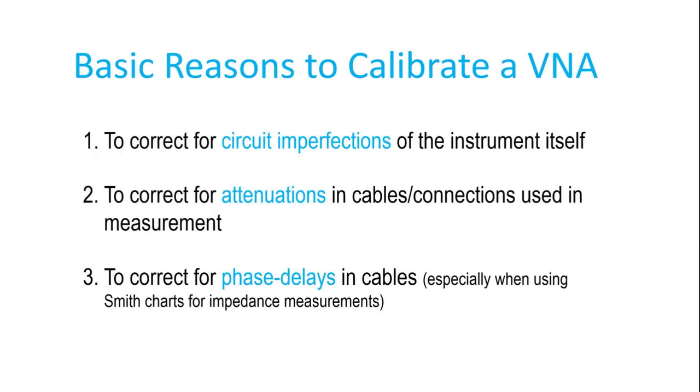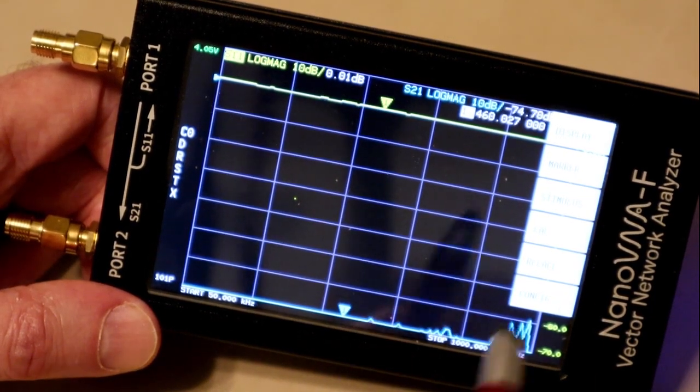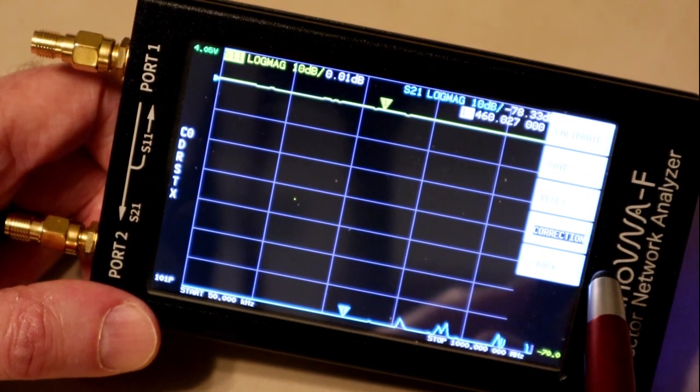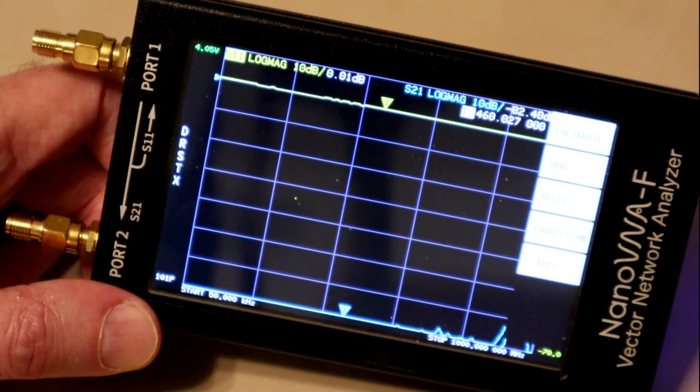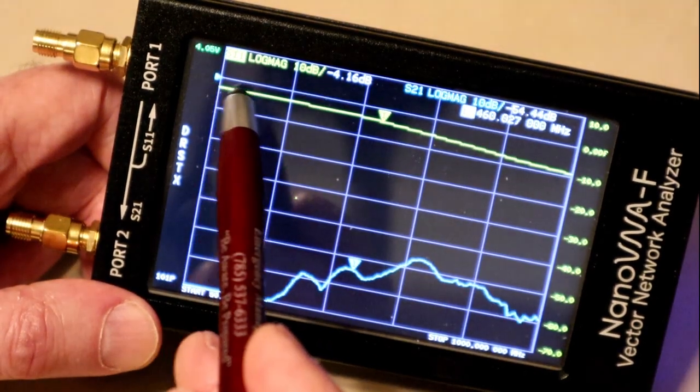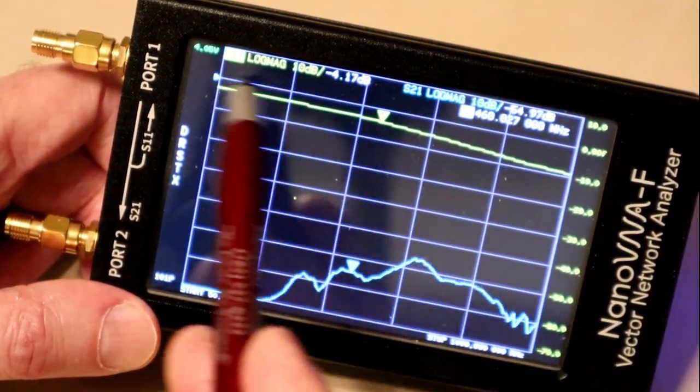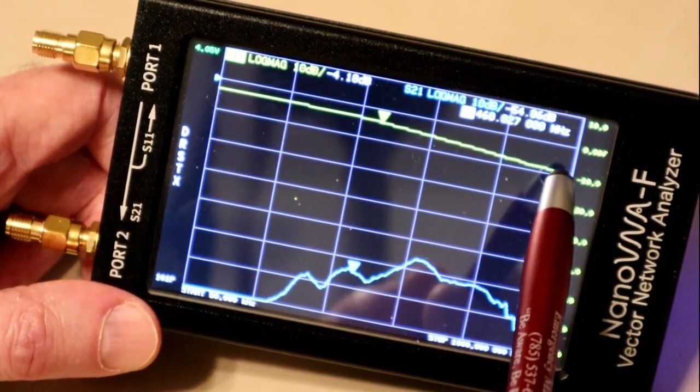So let's take a look at each one of these, starting with correcting for circuit imperfections. From the top level menu, I hit CAL, and it says correction, it's highlighted. I'm just going to hit it to turn it off. And now you can see what happened. At the low frequencies, we have a couple of dB drop from the 0 dB S11. At higher frequencies, we have even more drop.